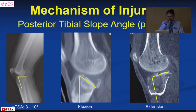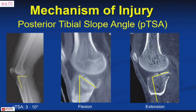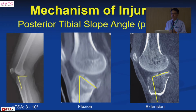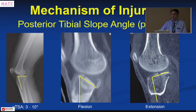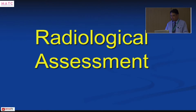Similarly, the posterior tibial slope normally measures between 3 and 10 degrees. If there is an increase in slope, the impact has been on the posterior aspect of the tibia — meaning the knee was in flexion — so you need a buttress on the posterior aspect. If the tibial slope has been reduced or reversed, the impact was with the knee in extension or even hyperextension, so the main buttress has to be anterior.